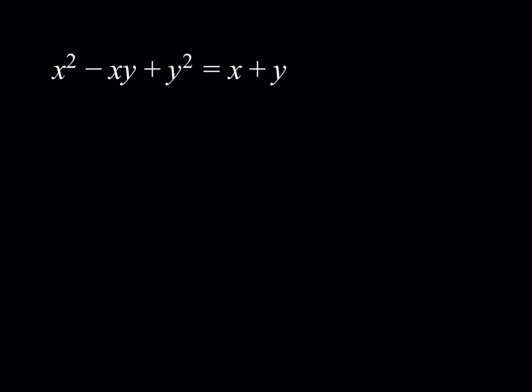We have x squared minus xy plus y squared is equal to x plus y, and we are looking for integer solutions. That's why we call this a Diophantine equation. A Diophantine equation has integer solutions, and a lot of times we have fewer equations than the number of variables. In this case, we have two variables and a single equation.